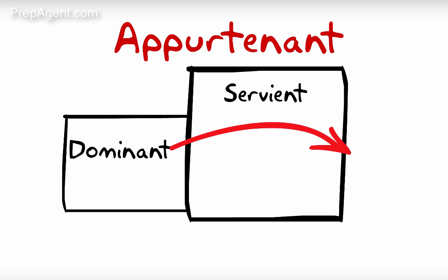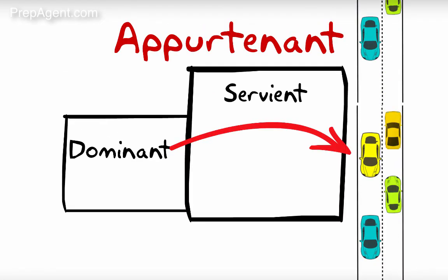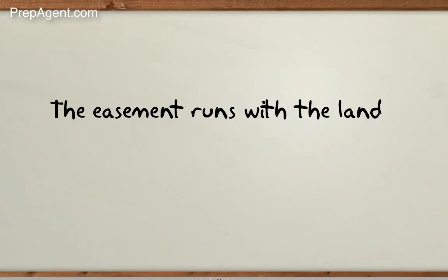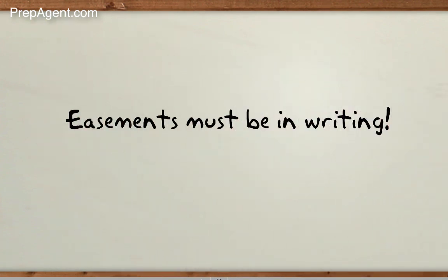The dominant tenement property is typically smaller than the servient tenement property. For example, your property can be landlocked, which means that it has no direct access to a public road. So to access your property from the public road, you must cross someone else's property. That property is now serving your purpose and is the servient tenement in what is now an appurtenant easement. The easement will continue after you and your neighbor sell your properties to others. An appurtenant easement attaches itself to a piece of property — it's said to run with the land, which means that whenever the property is sold, the new owner has the same rights to the use of the easement as the old owner did.